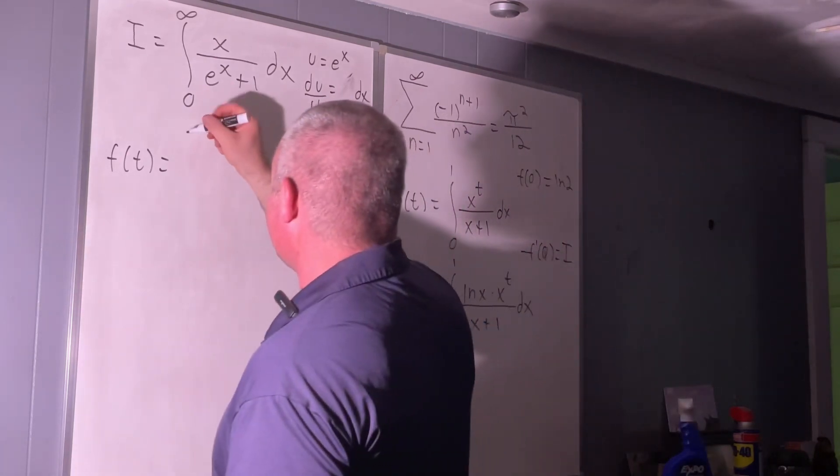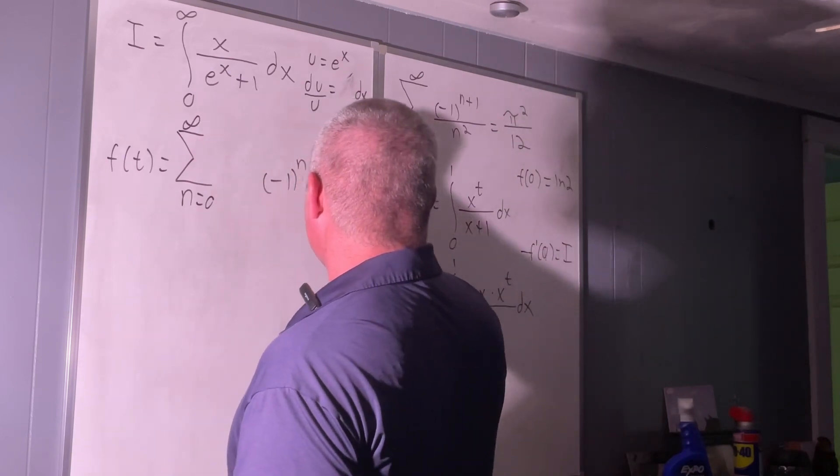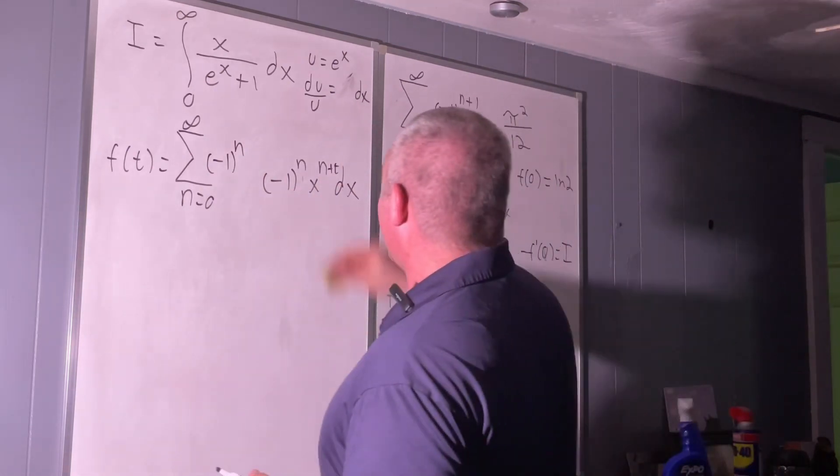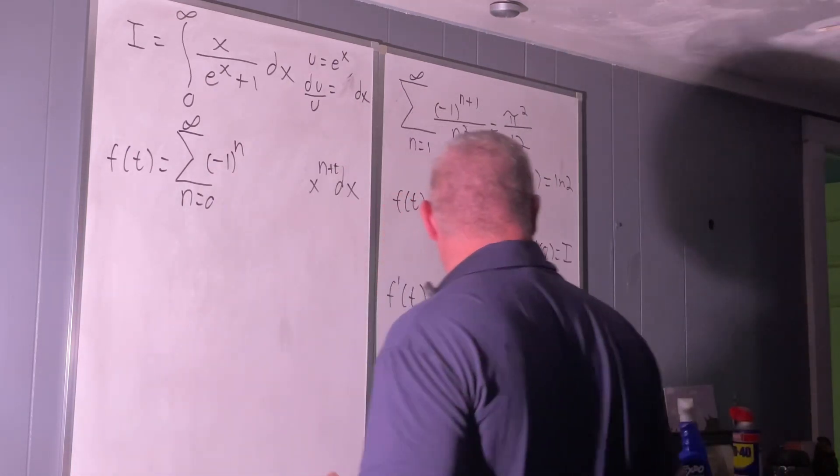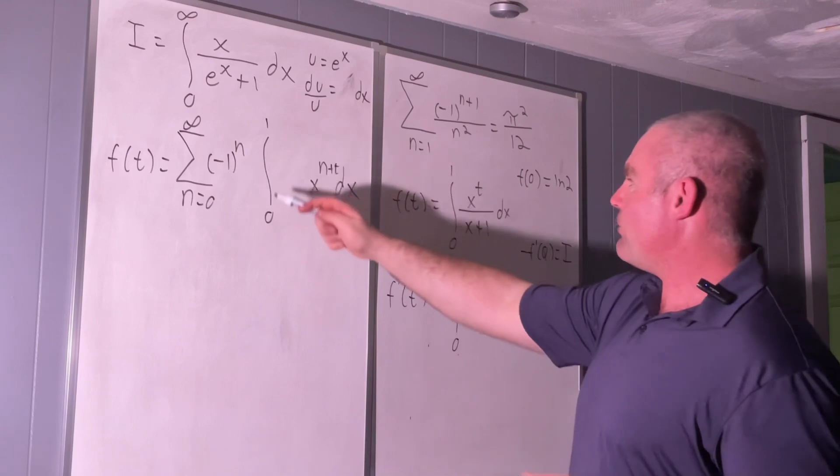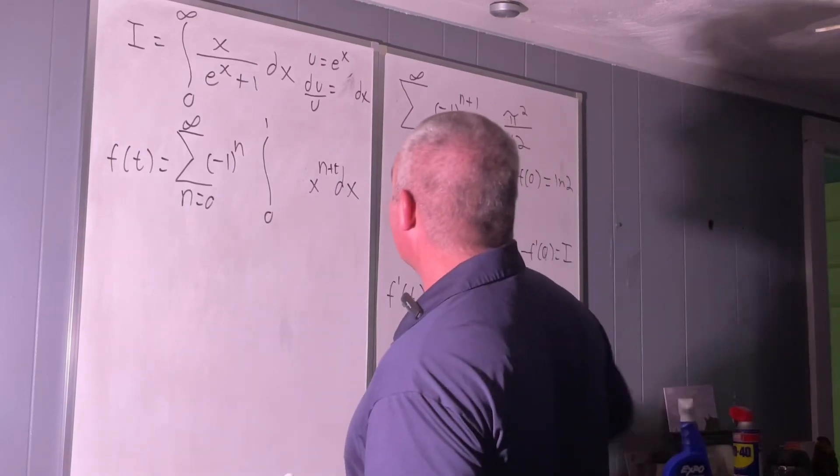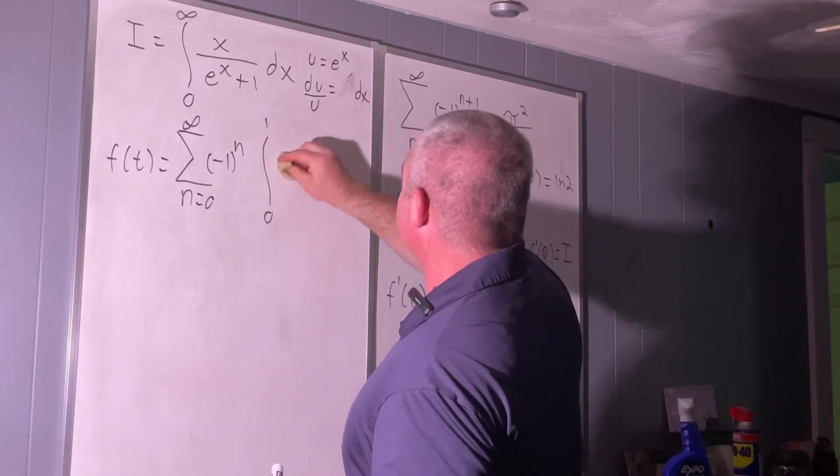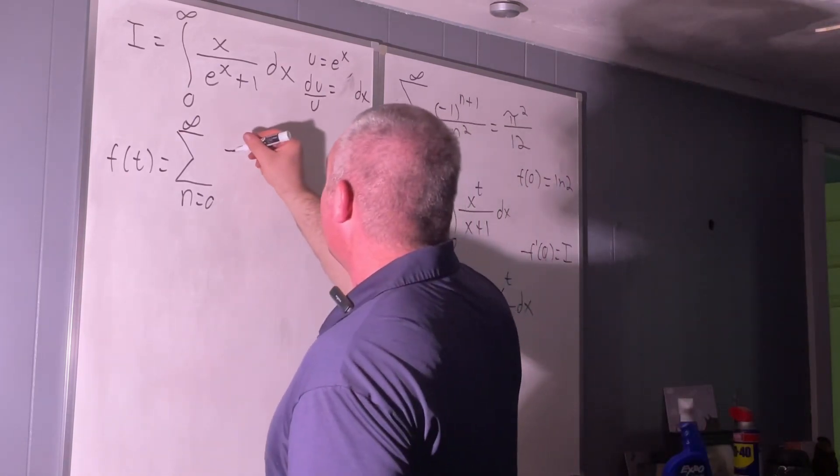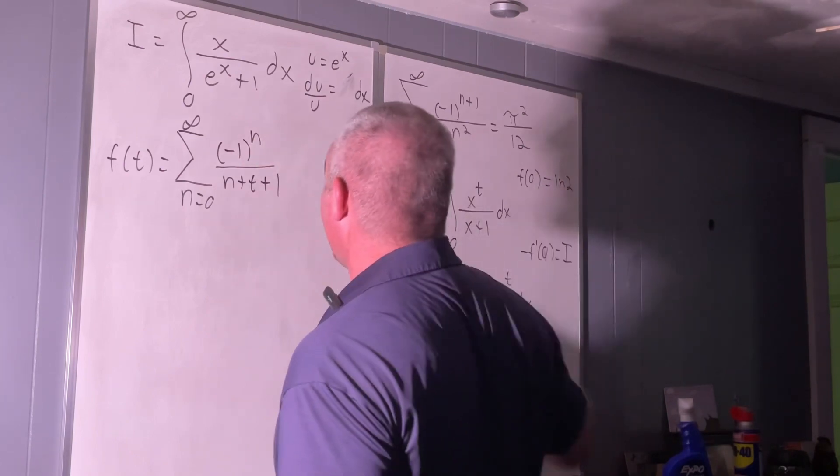So we're just going to have the sum as n goes from zero to infinity. And then we'll bring the negative one to the n before the integral sign. And then we'll just have integral zero to one. Well, let's see. If we evaluate the integral, we'll just get one over n plus t plus one. So that's negative one to the n over n plus t plus one. All right. So we're getting somewhere.